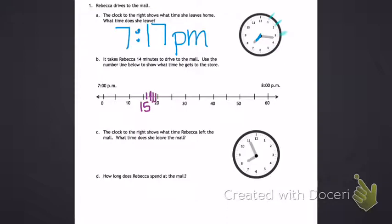1, 2, 3, 4, 5, 6, 7, 8, 9, 10, 11, 12, 13, 14. So right here at 31 is where she is getting to the mall.